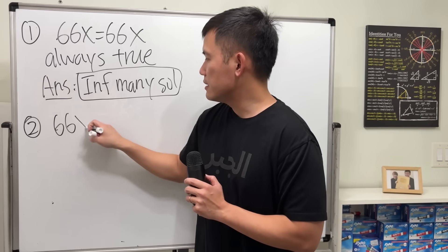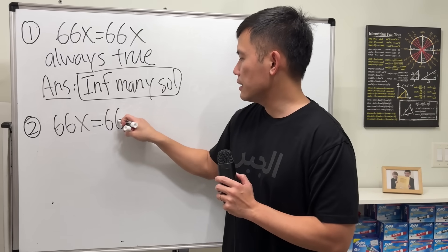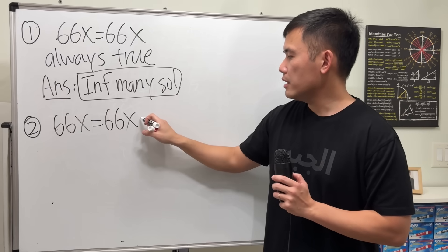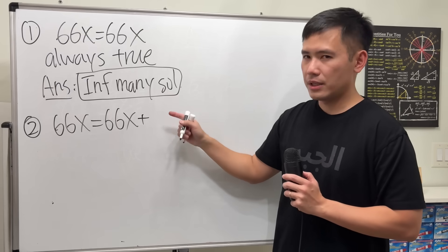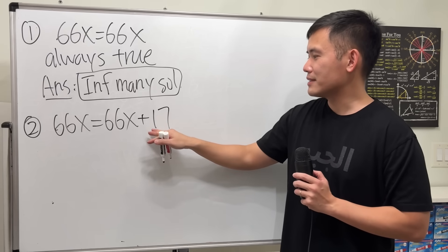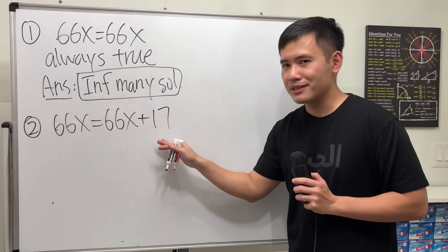Let's say we have 66x equals 66x again, but this is a totally different equation. Let's say here we have plus any number, let's say 17. You can put plus 1, plus 5, doesn't matter. Don't say plus 0.